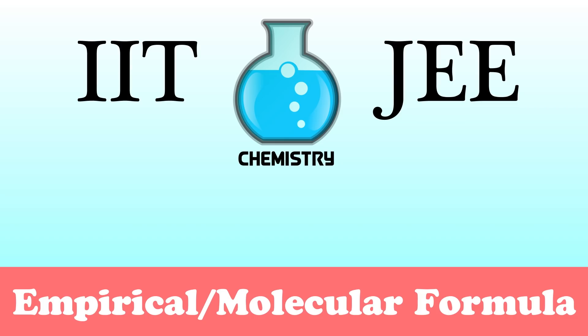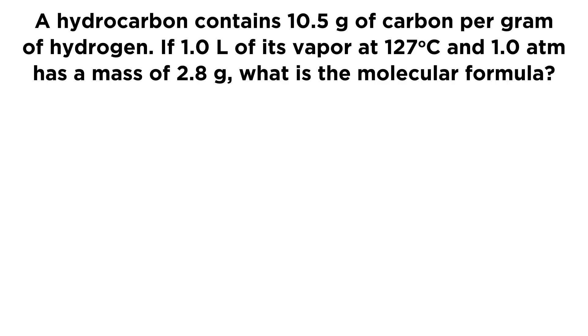Today we're going to look at a problem regarding empirical and molecular formulas. The question reads: a hydrocarbon contains 10.5 grams of carbon per gram of hydrogen, so for every gram of hydrogen we have 10.5 grams of carbon. And if one liter of its vapor at 127 degrees Celsius and one atmosphere has a mass of 2.8 grams, what is the molecular formula?